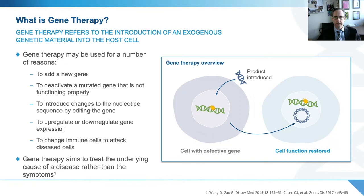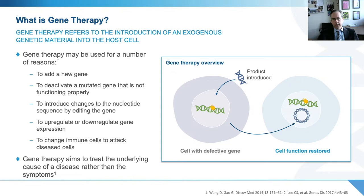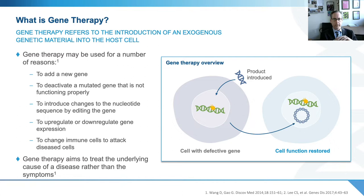When you're talking about gene therapy in general, you're talking about the use of exogenous genetic material to take a cell that has a defective gene and then restore that genetic material in some way so that the cell becomes more fully functional. This can be done in a variety of ways that is dependent on the kind of nature of the disease that you're dealing with. In cases where the gene product may be missing, the goal here may be to add a new gene. If there's a gene that's not functioning properly, then it's possible to deactivate that non-functional gene, introduce changes in nucleotide sequence by editing the gene, or upregulate or downregulate gene expression. And then usually in the context of cancer, it's also possible to change immune cells to attack diseased cells in a specific manner.